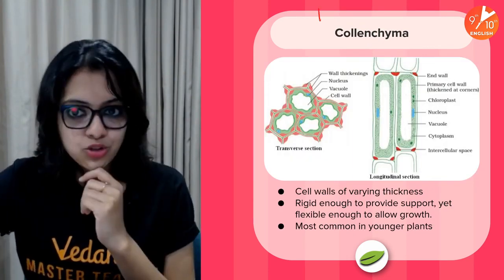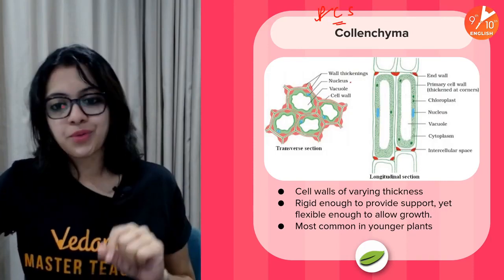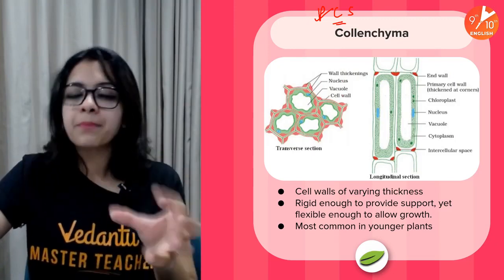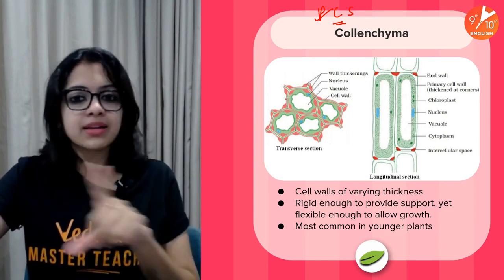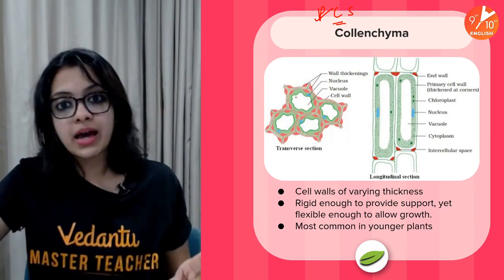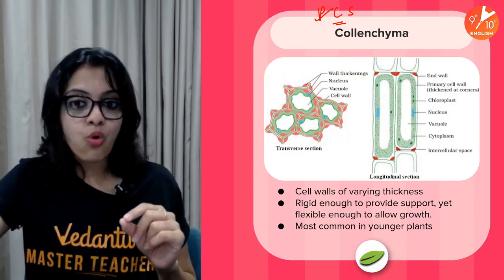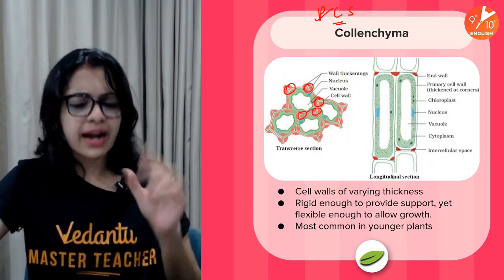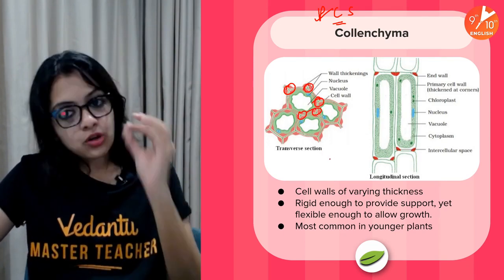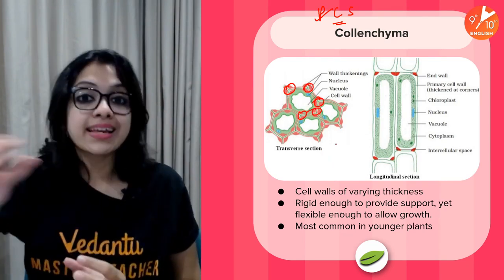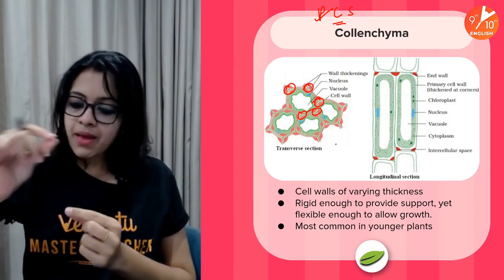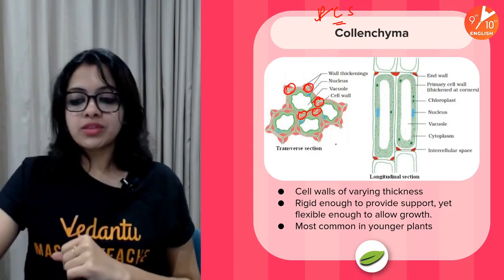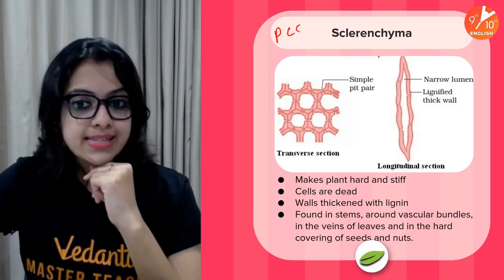Moving to C in PCS — collenchyma. It is very similar to parenchyma but has thickenings in the cell wall. These thickenings are found only at the corners of cells — uneven thickenings. Collenchyma helps in providing flexibility and rigidity to the plant body; you're able to bend a plant stem without breaking it because of collenchyma.